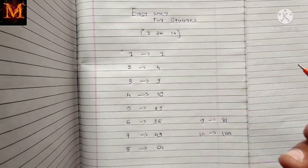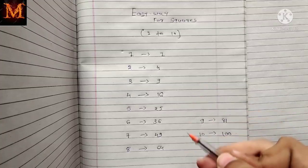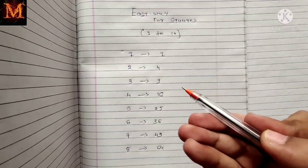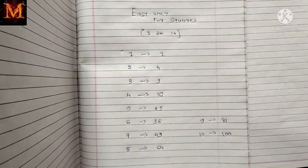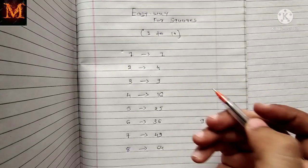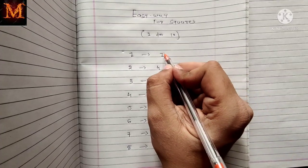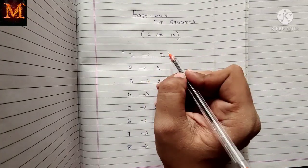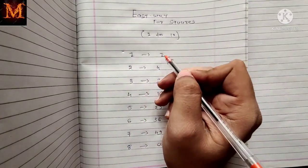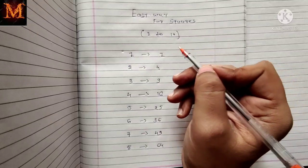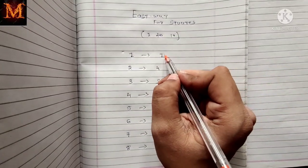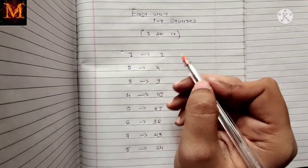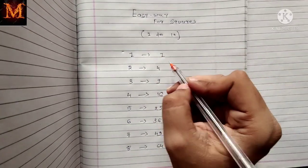Now you can see a pattern here — how we can remember squares from 1 to 10. For example, all of you must remember that square of 1 is 1, which is very easy. So first you have to remember this: square of 1 is 1.